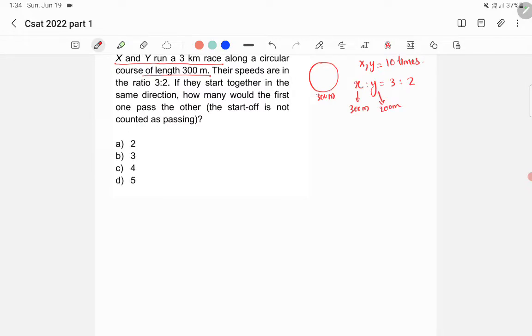Now we'll check the possibilities. When the race starts, X and Y are here at the same position. After they complete the first round, X completes 300 meters, and then Y will be completing only 200 meters, so Y is here at 200 meters.